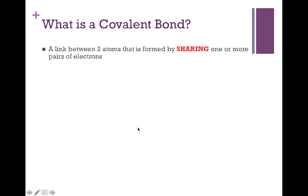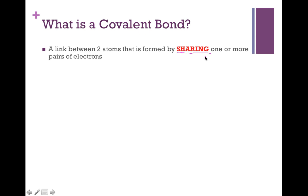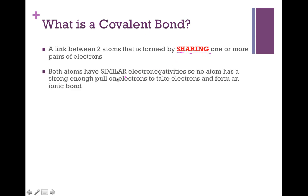Let's move into a discussion of what a covalent bond actually is. A covalent bond is a link between two atoms formed by sharing one or more pairs of electrons between them. Remember, ionic bonding is when electrons are exchanged between atoms to complete octets. In covalent bonding, we're sharing electrons in order to complete octets. Both atoms have similar electronegativities — the attractive force the atom exerts on bonding electrons — and as a result, no atom has a strong enough pull to take electrons from the other. Since neither can take from the other, they share, and we get a covalent bond.